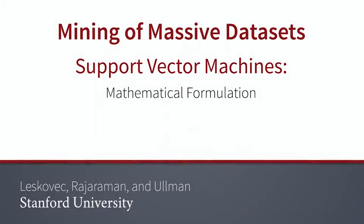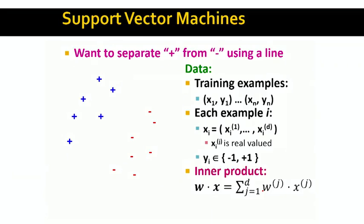Given that we know what we want to do, the question is how do we define the support vector machines classifier? Intuitively, our goal is to separate pluses from minuses — we want to separate spam email from non-spam email.